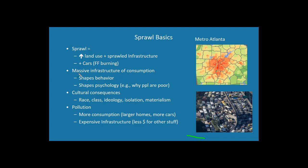All of this constitutes a massive infrastructure of consumption that shapes behavior and psychology as well. One function of sprawl is that people often don't live near people of different income status, so you get all kinds of mistaken ideas — for example, about why people are poor — because they're not really living in diverse environments with people from different economic backgrounds. You get consequences of raised class ideology, isolation, and materialism.